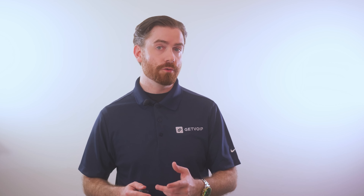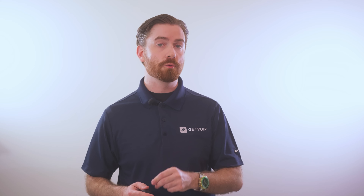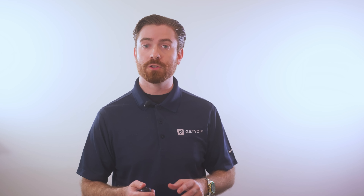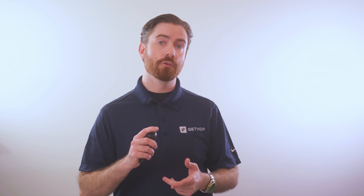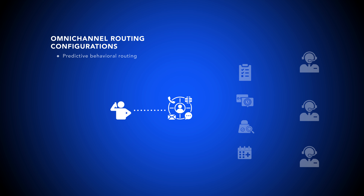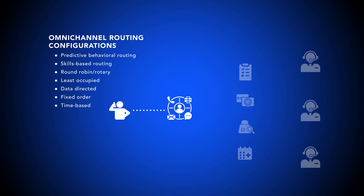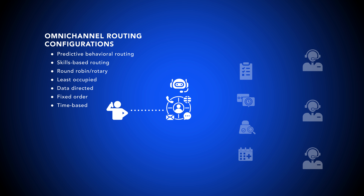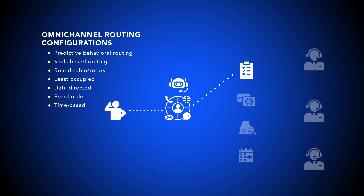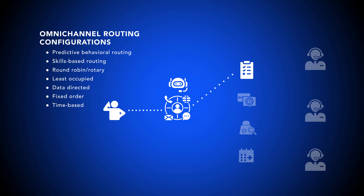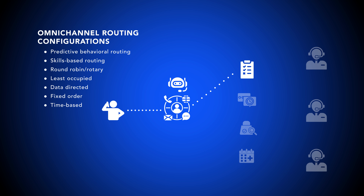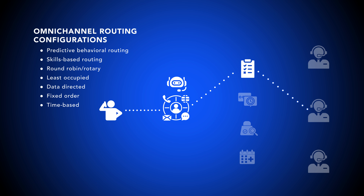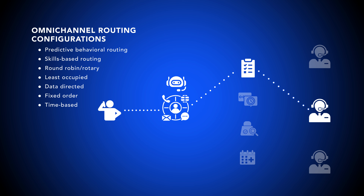Omni-Channel Routing uses intelligent routing software to direct inbound calls, messages, live chats, and more to the best agent according to pre-set rules determined by the company. When new queries come in, the call center software uses artificial intelligence, natural language processing, and automatic speech recognition to determine the customer intent. Once intent is determined, customers are automatically routed through an automatic contact distributor to a qualified agent regardless of the channel used.